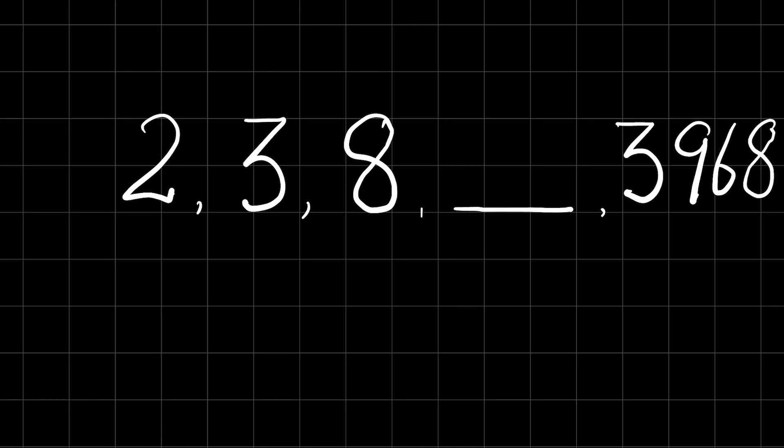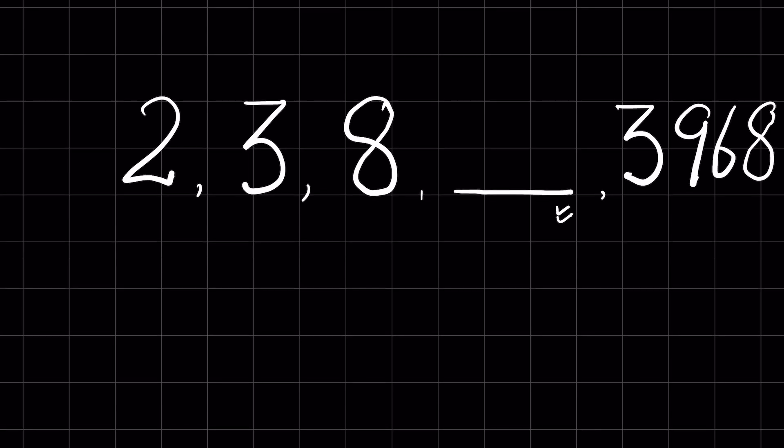This is a series: 2, 3, 8, blank, 3968. We have to find the missing number. Can you answer it? Pause the video and let me know your answer in the comment section. In these types of series, we have to find a pattern. What is the relation between these numbers?